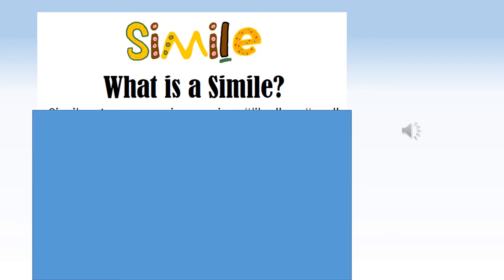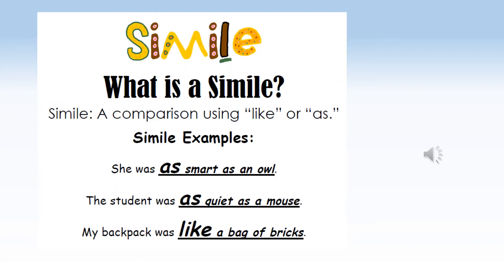What is a simile? Can you remember — there are two key words that tell us whether something is a simile? A simile is where you compare something to something else and you use the words 'like' or 'as'. You will often see 'as' used twice — for example, 'as smart as an owl'. Or you might use the word 'like': 'My backpack was like a bag of bricks.'